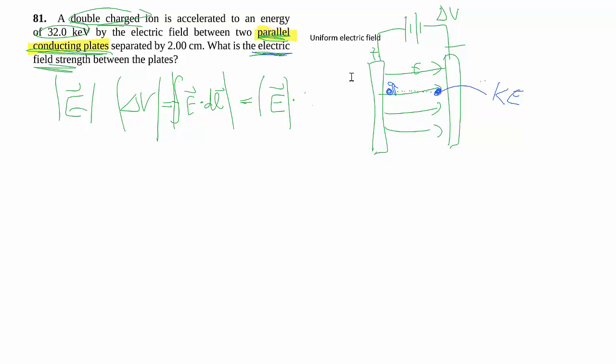Multiplied by some kind of change in distance, which is the separation of the plates. The assumption of course is that the ion went from one plate all the way to the other plate, and that's usually what we go with.